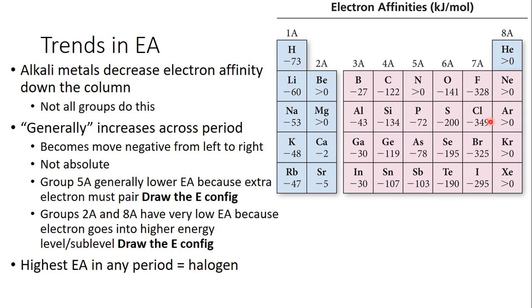And the lowest - and it says highest - but the most favorable electron energy in any period is the halogen. They really want that electron to become like the noble gas, to have a full octet in their valence shell.